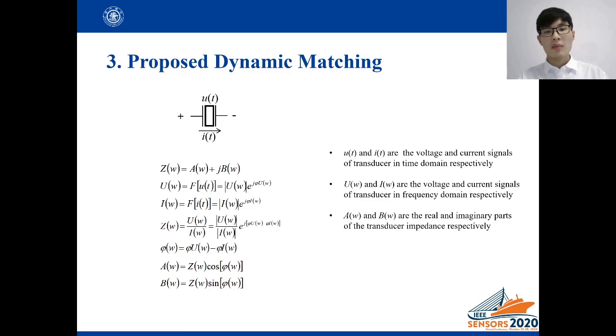Assuming that the impedance of the transducer is Z, we can obtain the value of Z by the following equations. Lower case u and i are the voltage and current signals of transducer in time domain. Capital U and I are the voltage and current signals of transducer in frequency domain. Capital A and B are the real and imaginary parts of the transducer impedance.